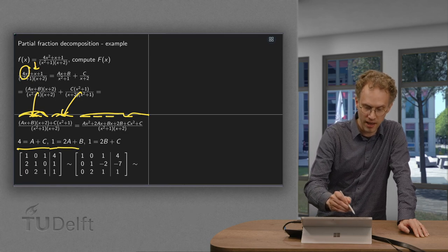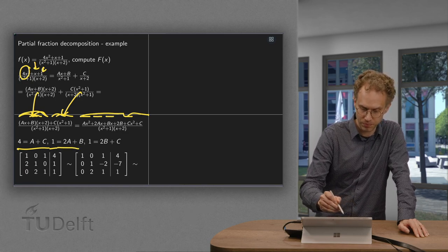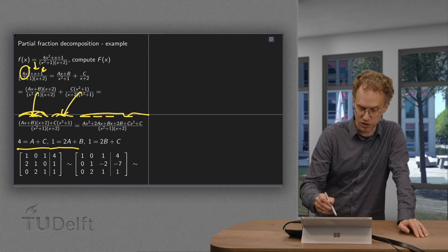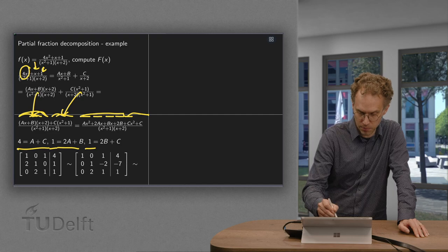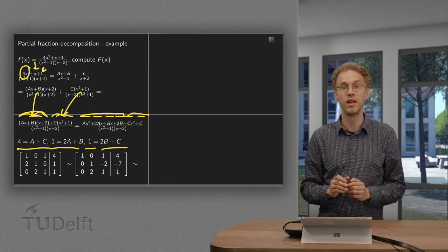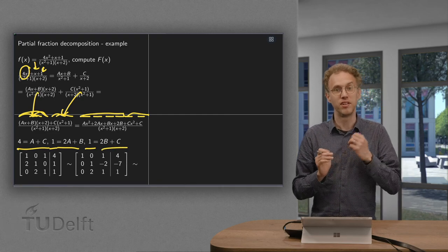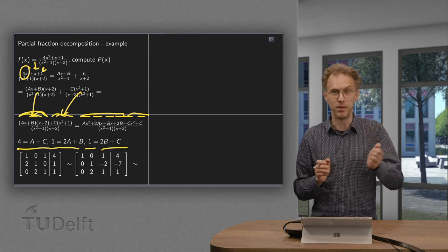So 1 equals 2a plus b. And constant term here or 1. Again what constant term do we have over here? So this 1 equals 2b plus c. So there we go. So you see we are left with three linear equations in a, b and c.